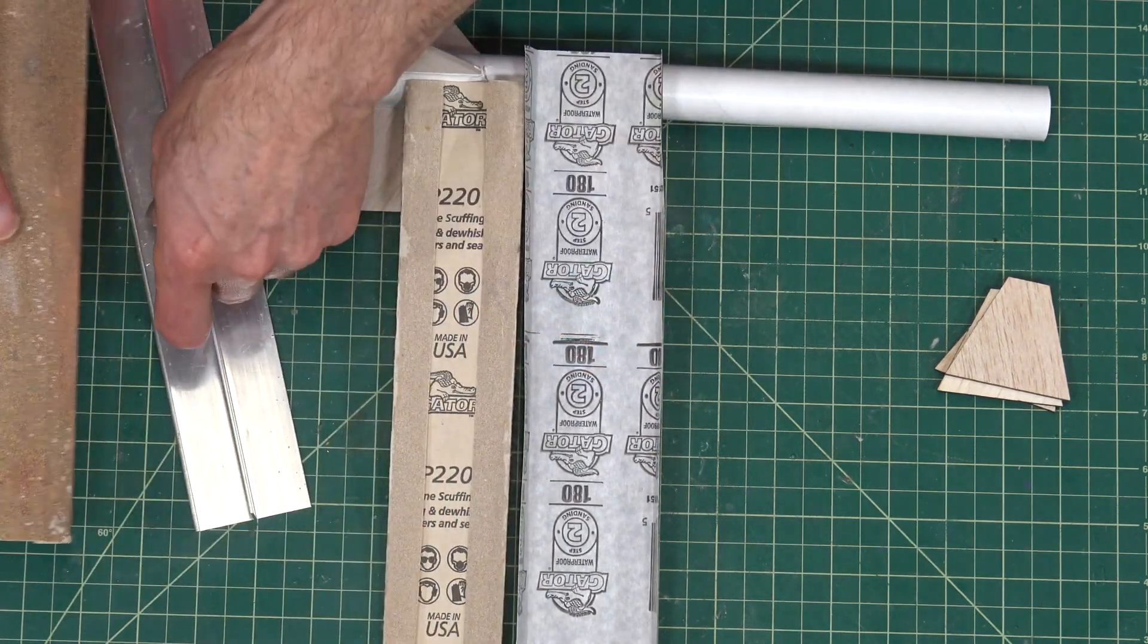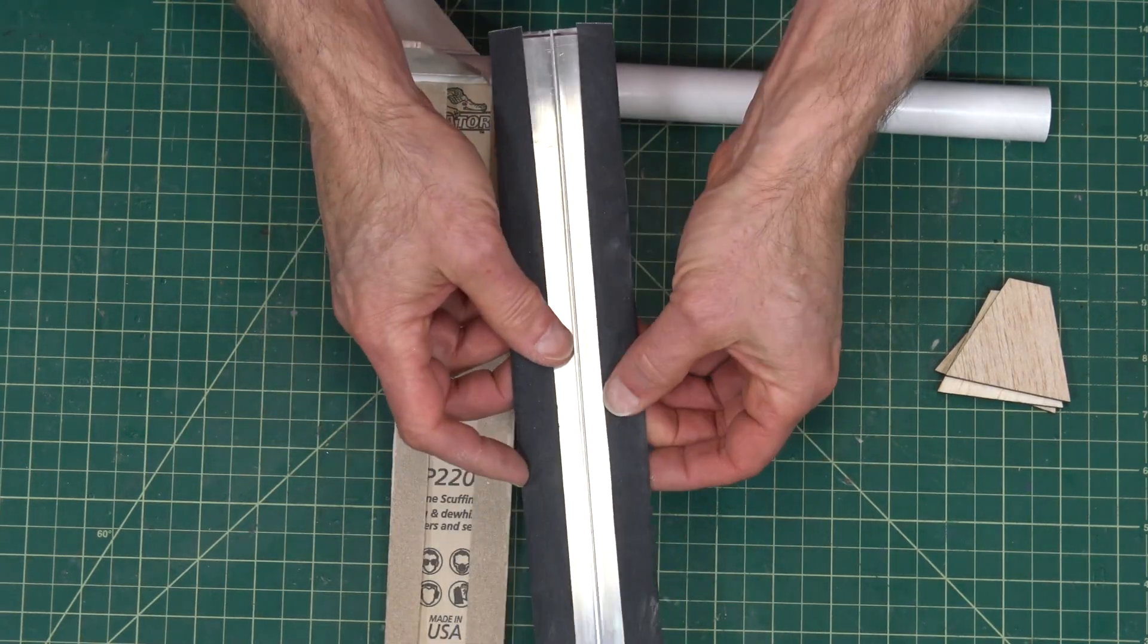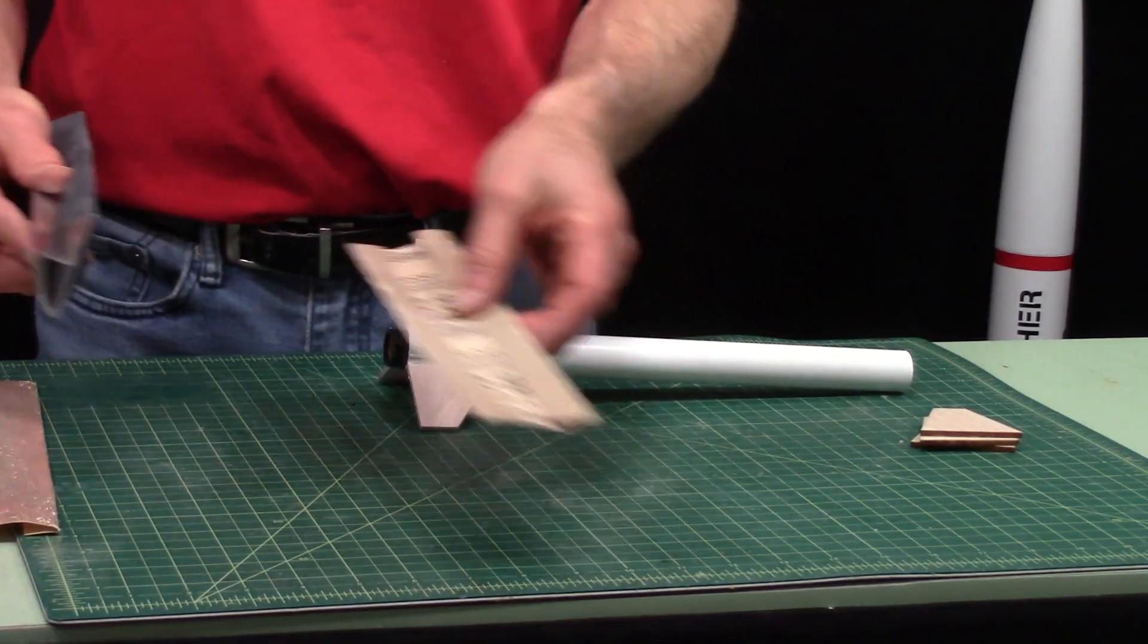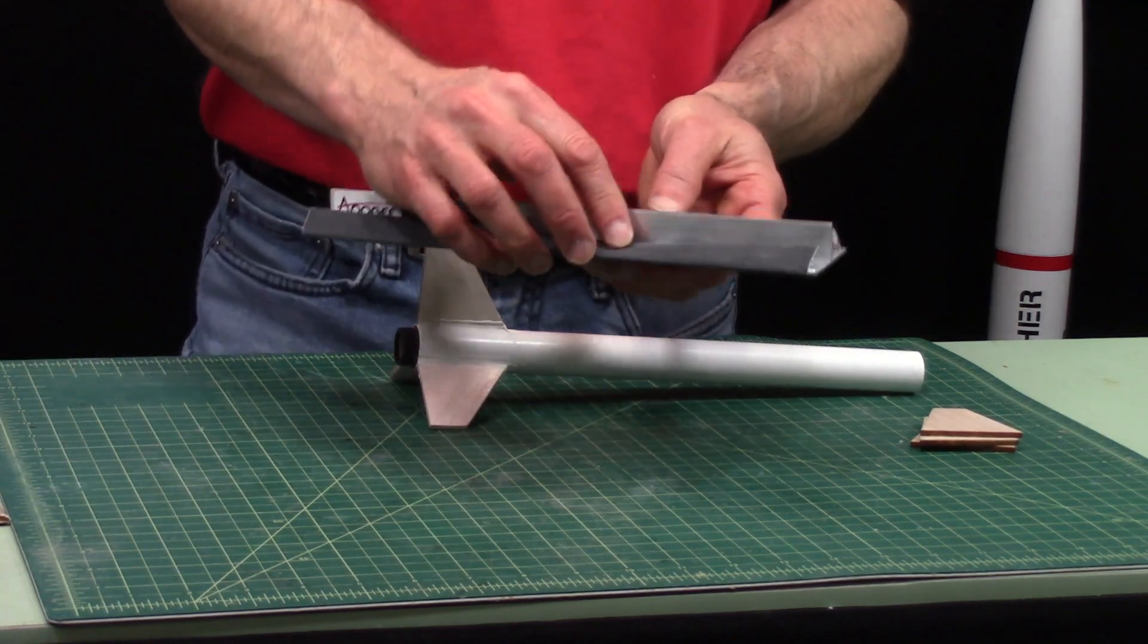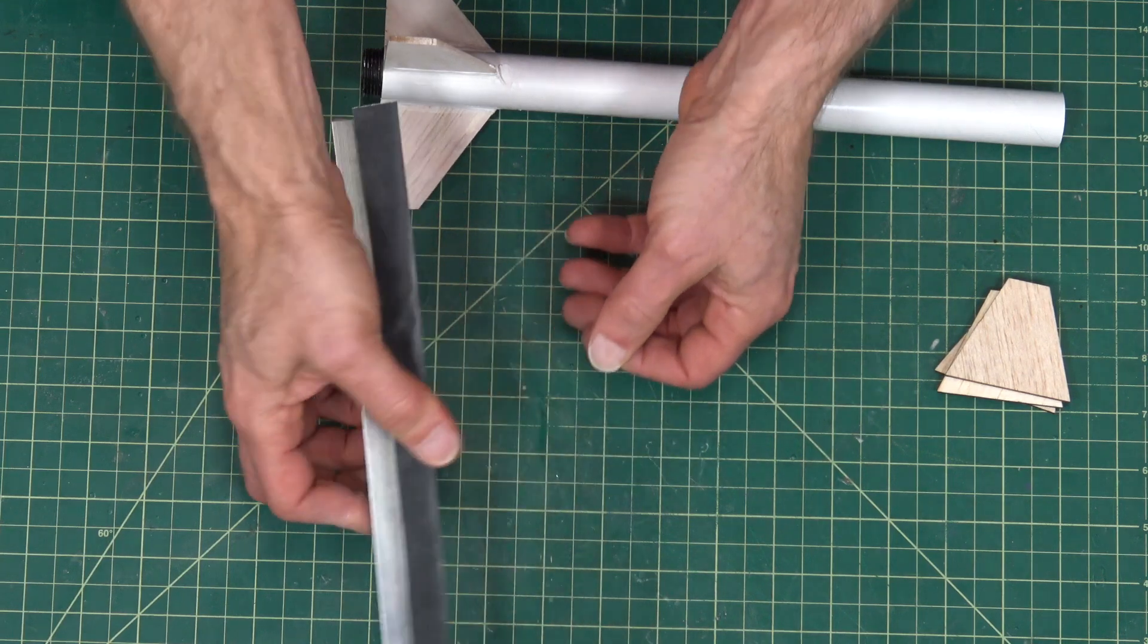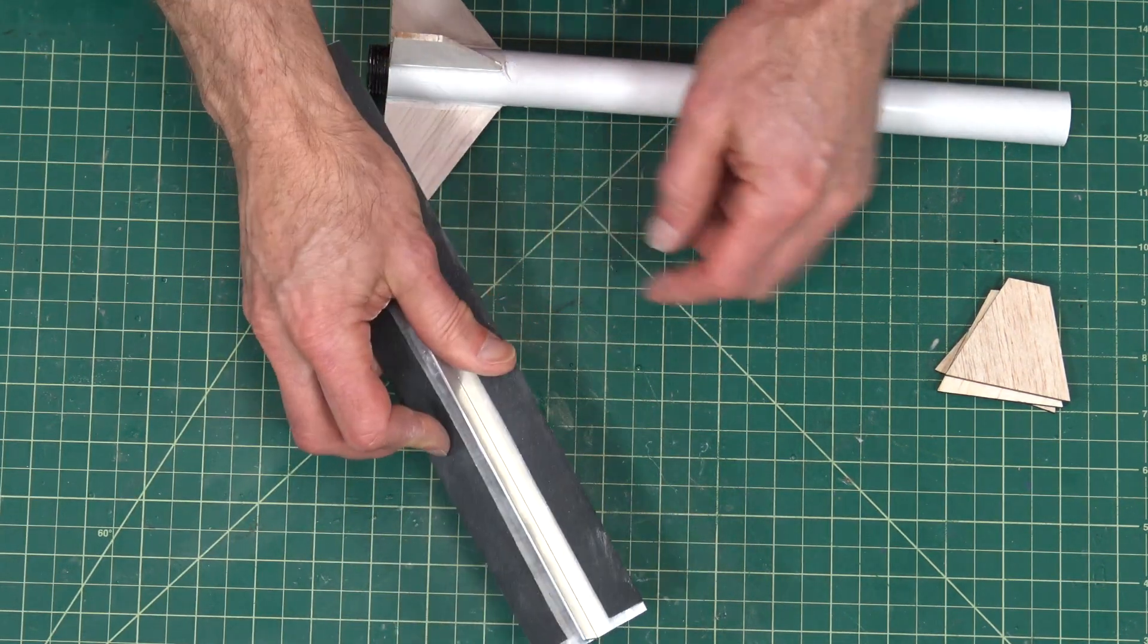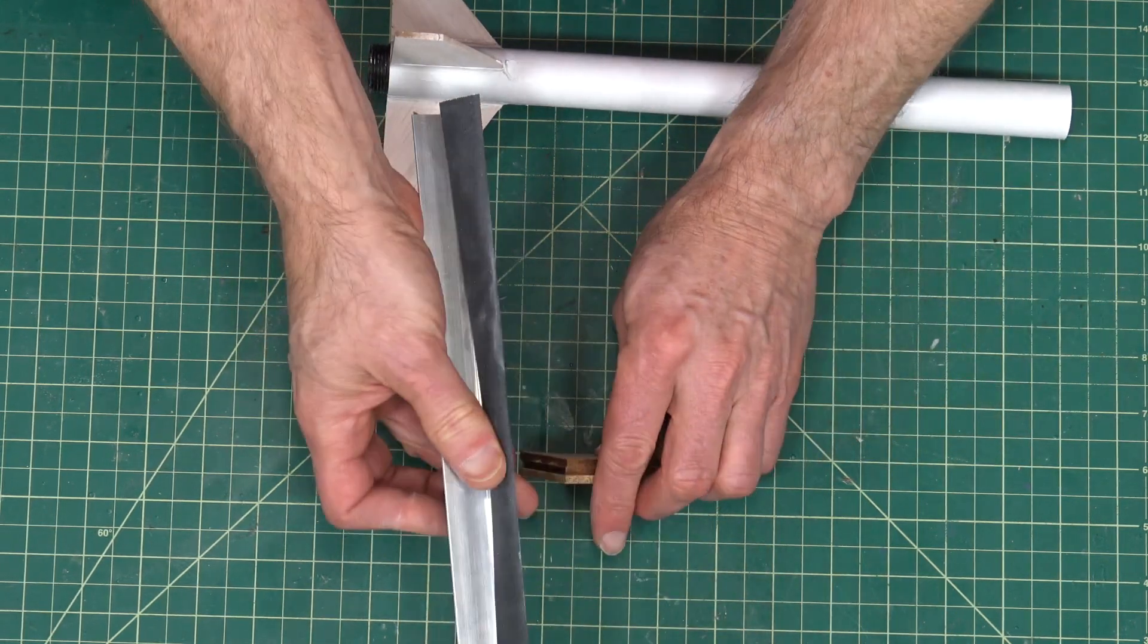The way I use them is I just put them on there like that and I can switch sandpapers really quick. You'll notice what I do is I just grab it and just hold it tight like that, and just using these fingers to hold it.